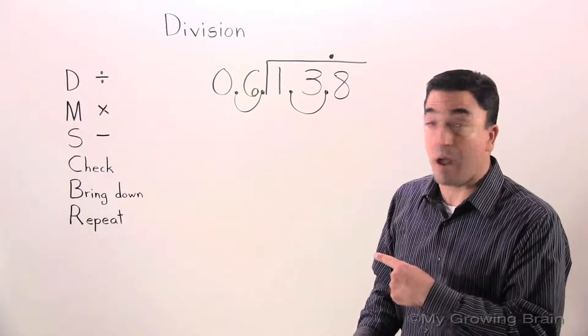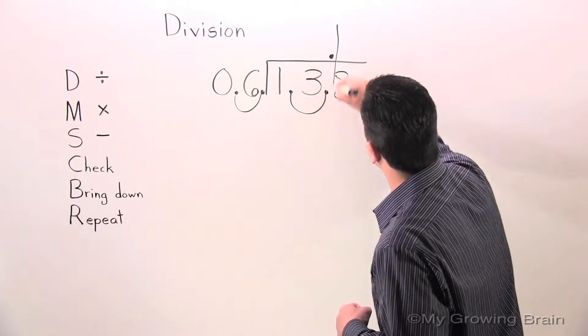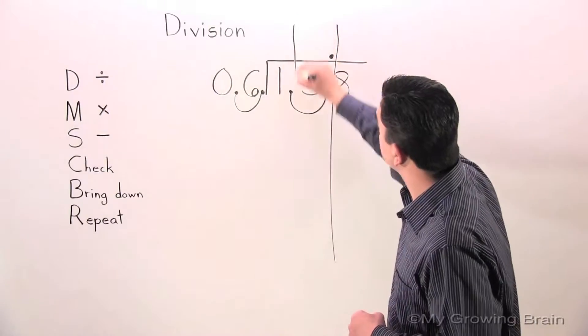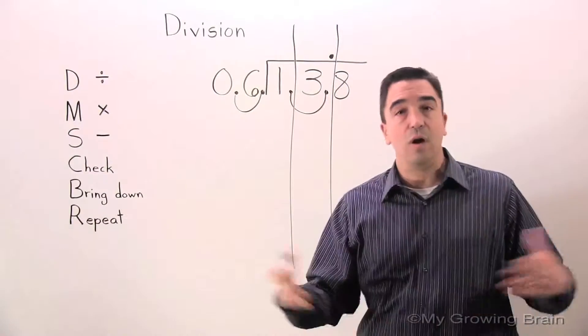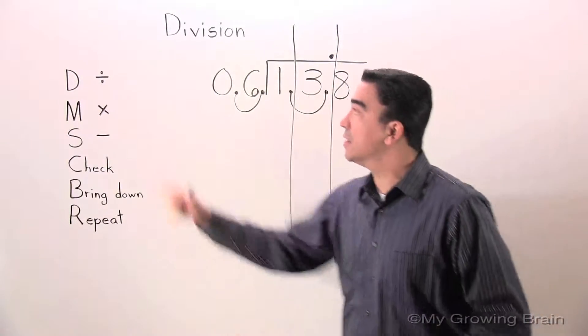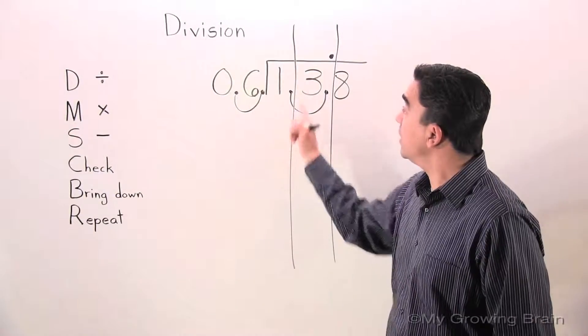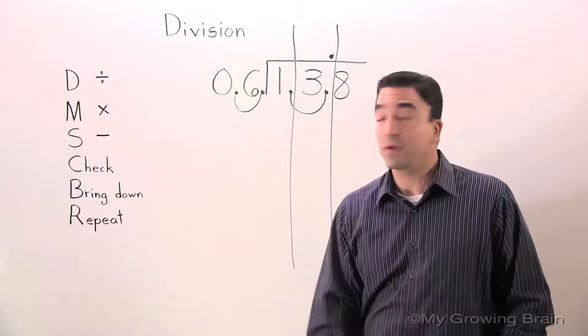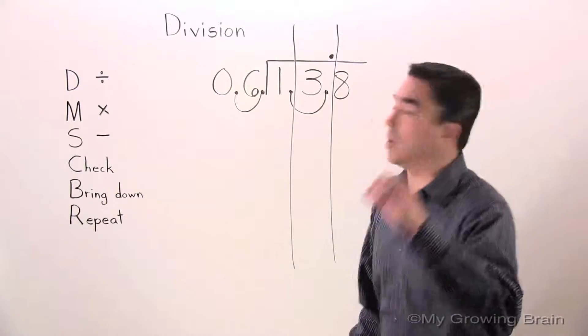Now I'm going to organize my problem. All right, let's get to it. First step: one divided by six. Can't do it. Use a zero.